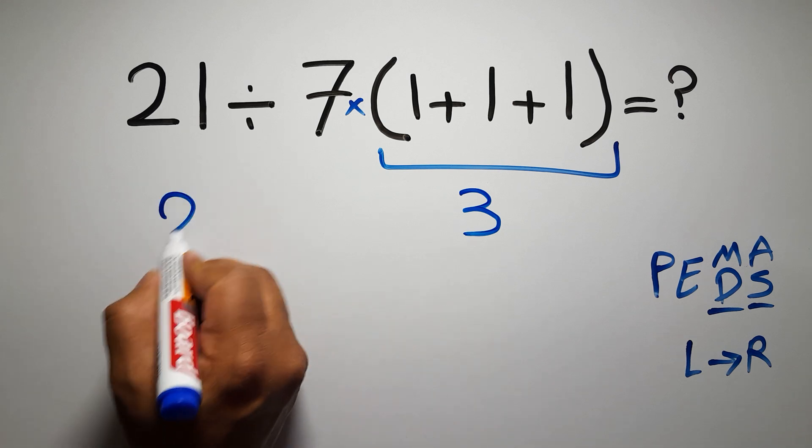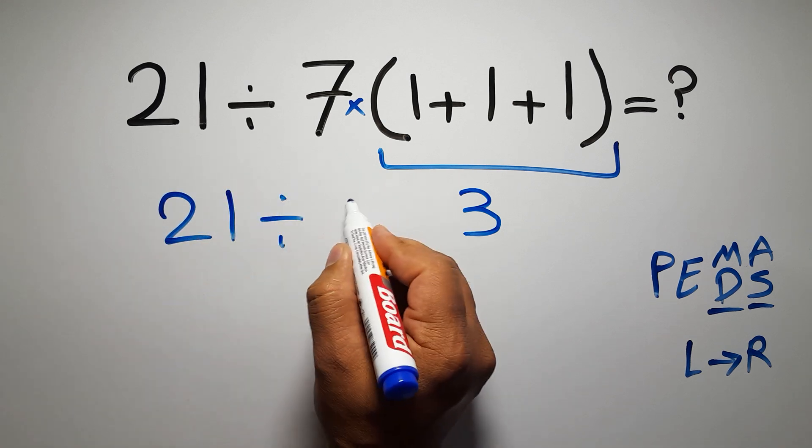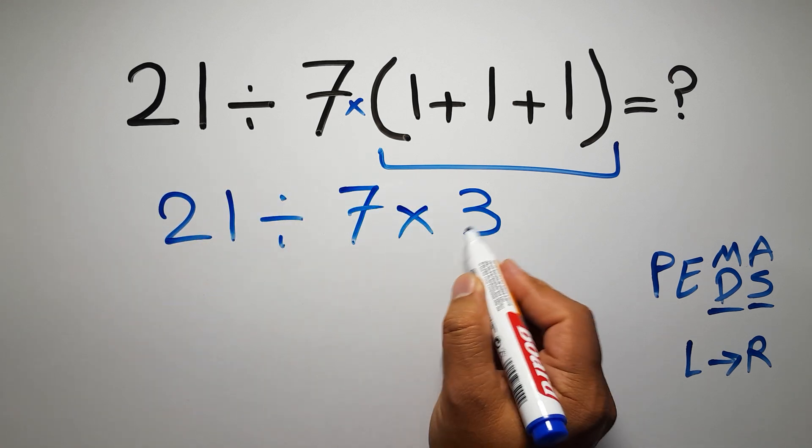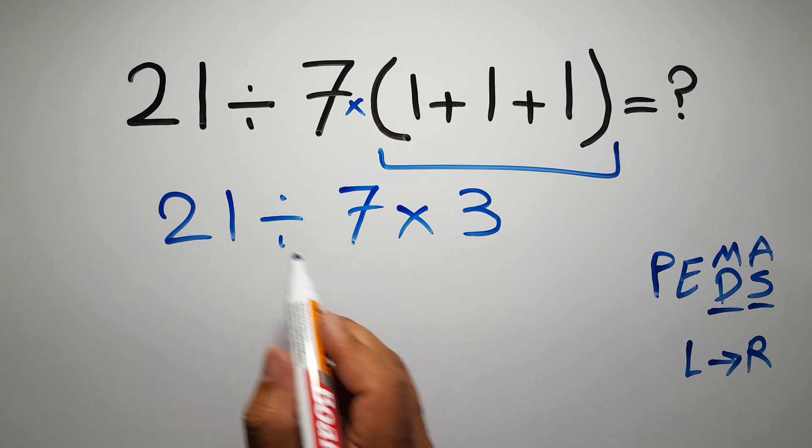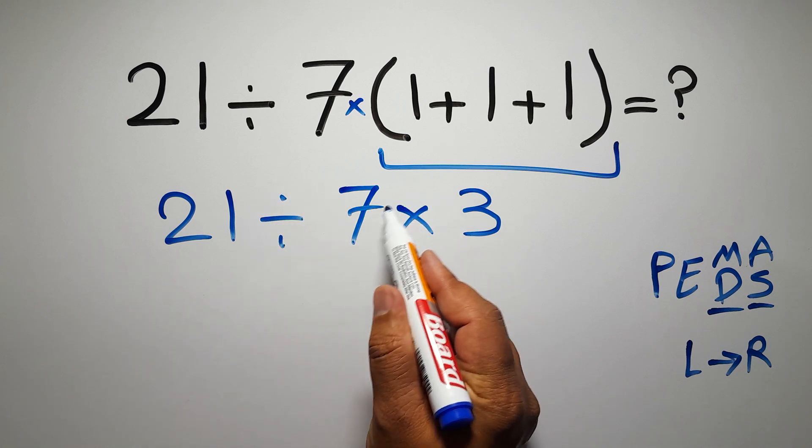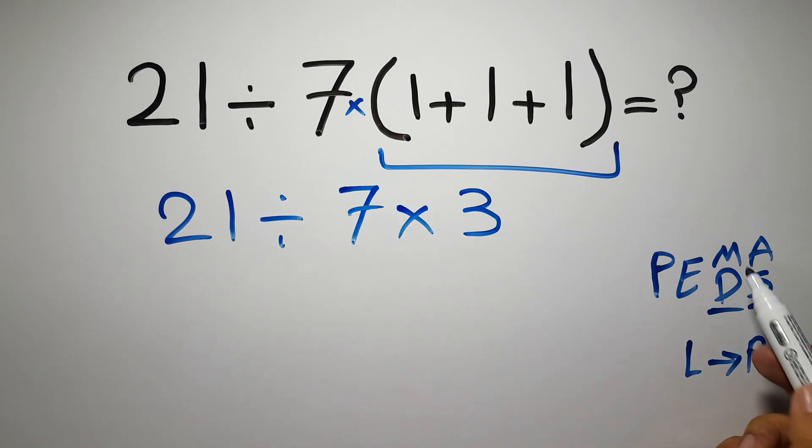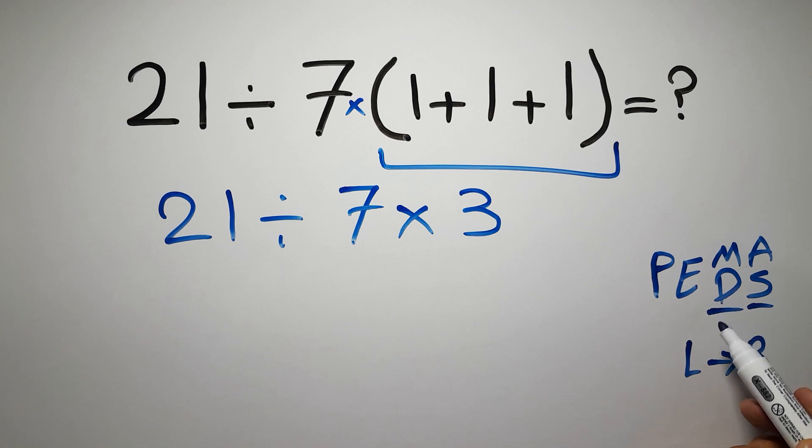So we have 21 divided by 7 times 3. Now we have one division and one multiplication. As I said, multiplication and division have equal priority, and we have to work from left to right.